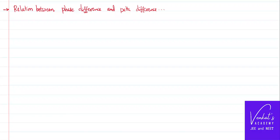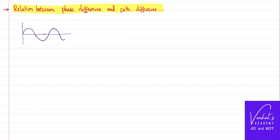Hello everyone. In this video we would like to find out the relation between phase difference and path difference of a particle in wave motion. Let us see what a wave is — it's a transverse wave with crests and troughs. The separation between two successive crests is called wavelength, lambda.